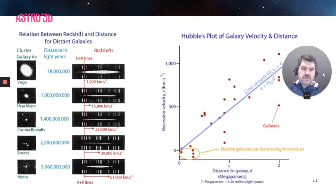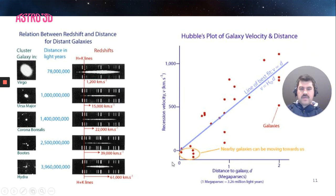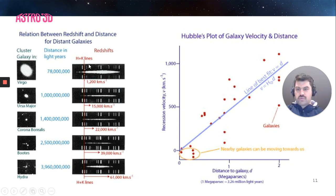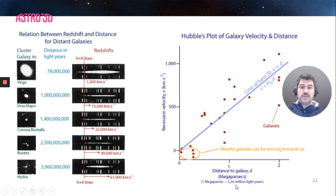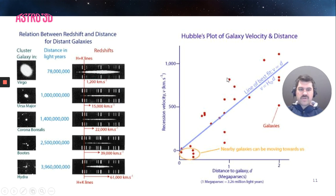We can plot this information on a graph, and that's the goal of today's activity. On the y-axis we have recessional velocity in kilometers per second, and on the x-axis we have distance to the galaxy in megaparsecs. One megaparsec is 3.26 million light years. With all these data points on this graph, we can plot a line of best fit, which goes through the origin at (0, 0). This graph isn't perfect — there are lots of data points above and below the line — but from this line of best fit, we can work out Hubble's constant.